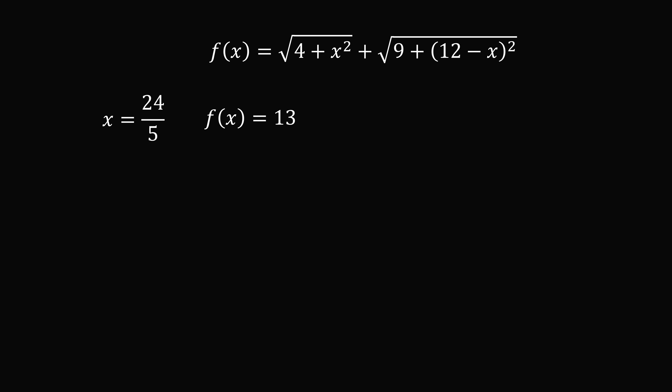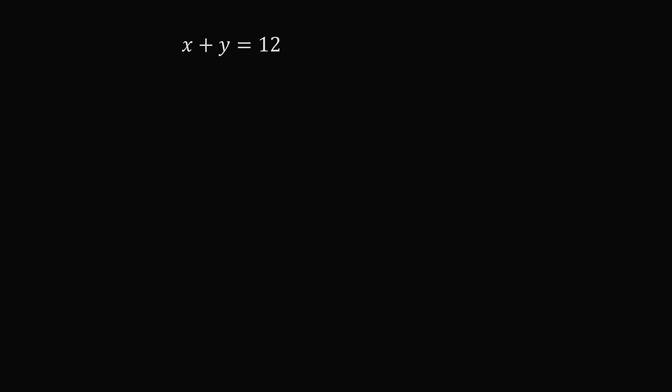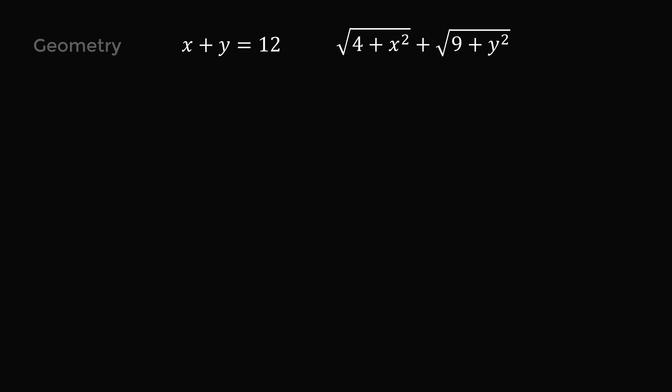Now let's solve this with a trick using geometry. We have x plus y equal to 12, and we want to minimize the square root of 4 plus x squared plus the square root of 9 plus y squared. We can rewrite the square roots as the square root of 2 squared plus x squared plus the square root of 3 squared plus y squared — so each term is the hypotenuse of a right triangle.